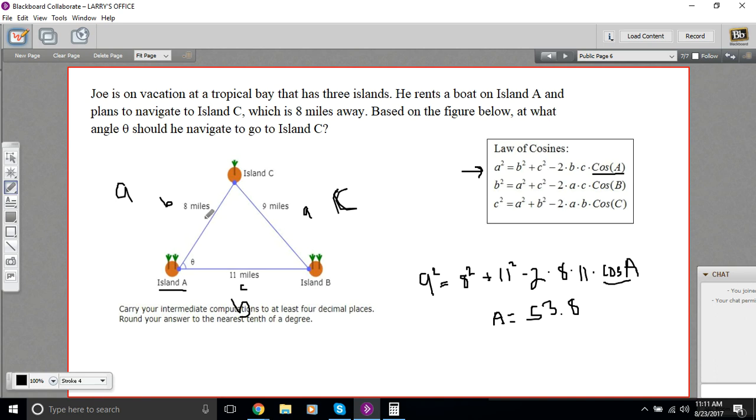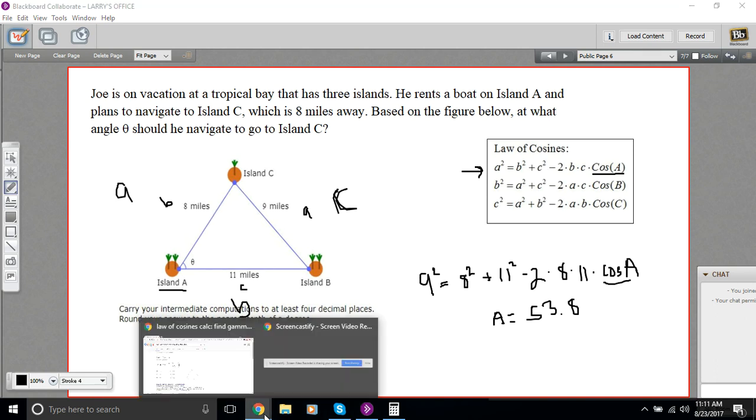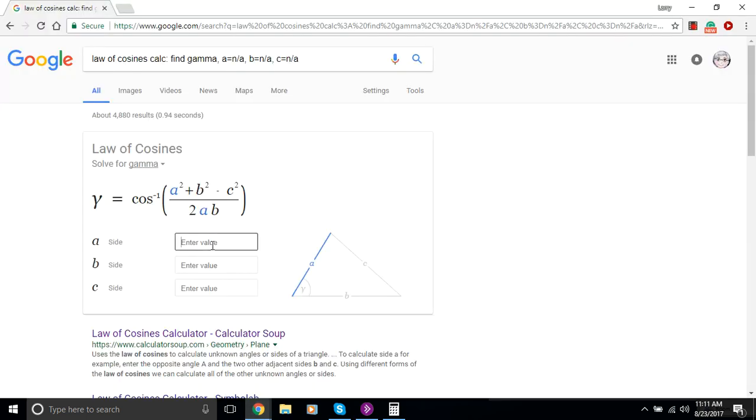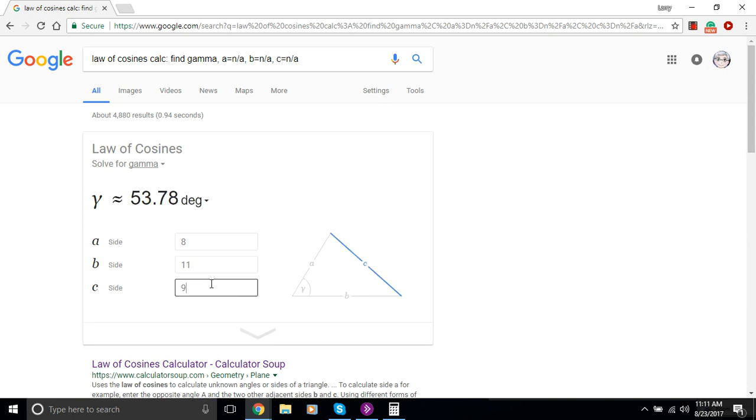So A is 8, B is 11, and C is 9. So A is 8, B is 11, and C is 9. And there we go.